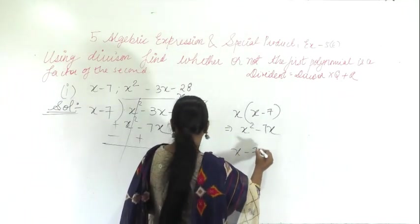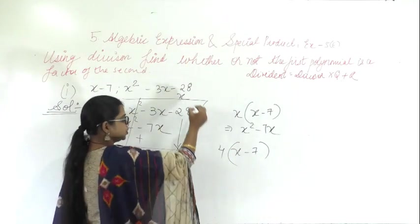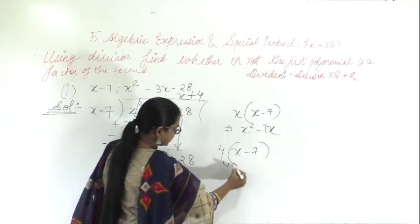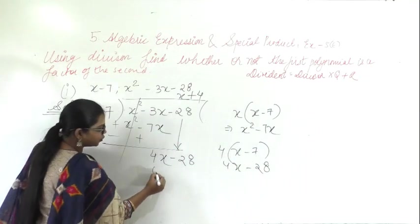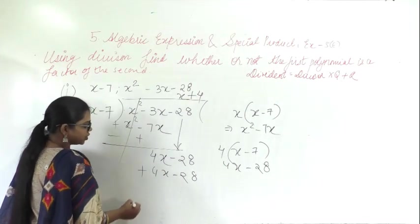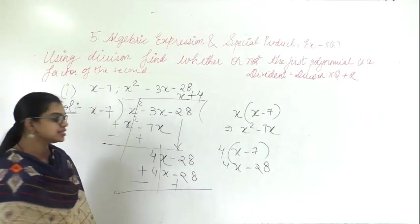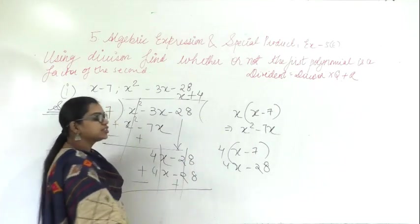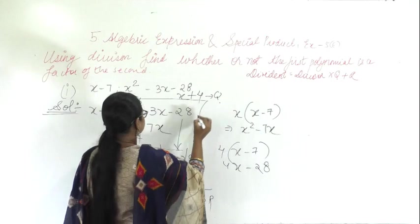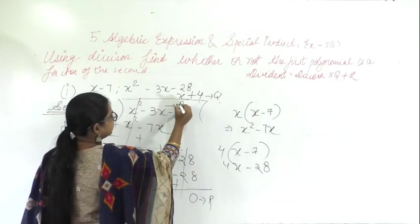Again, by which number will you multiply to get 4x? Multiply by 4, so write plus 4. So 4 into x is 4x, minus 4 into 7 is 28. Change the sign — plus becomes minus. Plus 4x and minus 4x cancel, plus 28 and minus 28 cancel. Remainder is 0. So this is the remainder, this is the quotient, this is the divisor, this is the dividend.